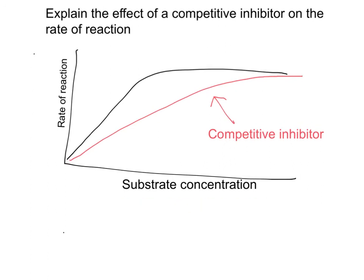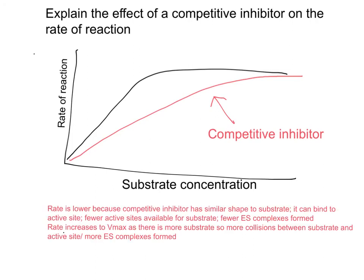Explaining the effect of the competitive inhibitor, you're telling the examiner why. The rate decreases because the competitive inhibitor has a similar shape to the substrate — it has a complementary shape to the active site, so it is also able to bind to the active site. This means that fewer active sites are available for the substrate to bind, or fewer enzyme-substrate complexes can be formed. However, the rate increases as you add more substrate because the substrate is now in excess, so there is a greater chance of collisions between enzyme and substrate rather than between enzyme and inhibitor. So the rate will increase, eventually reaching the maximum rate, or Vmax. These are your key mark points.